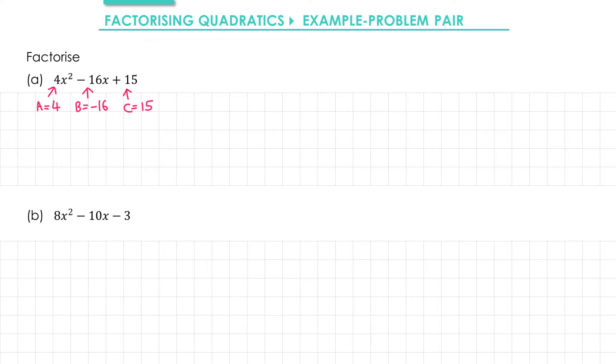So the first step to this method is to find two numbers that multiply together to make a times c, so 4 times 15 which is 60. I also want the same two numbers to add together to make b, which in this case is negative 16. The numbers I'm looking for in this case are negative 10 and negative 6.